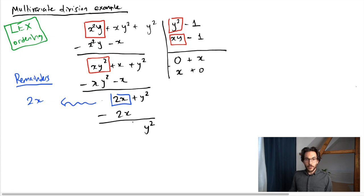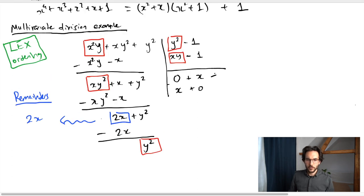Now what happens is that the new leading term y squared is in fact divisible by the y squared here. So I just continue with my loop again by trying to divide by these leading terms. This time y squared divided by this y squared is 1, and again I add nothing here. Just continue: y squared minus 1 times 1 is y squared minus 1, and the difference is just 1.